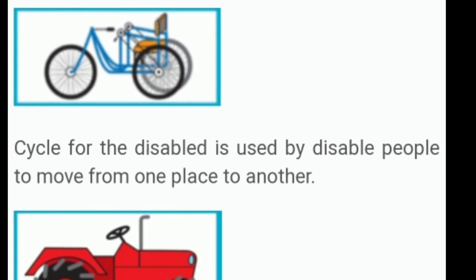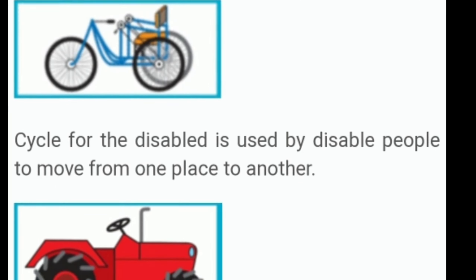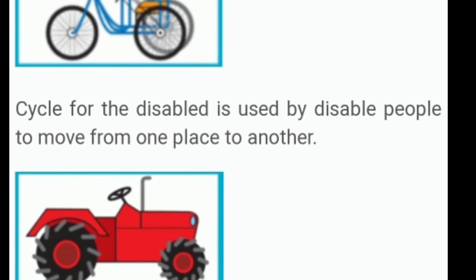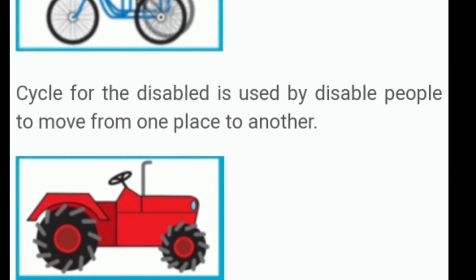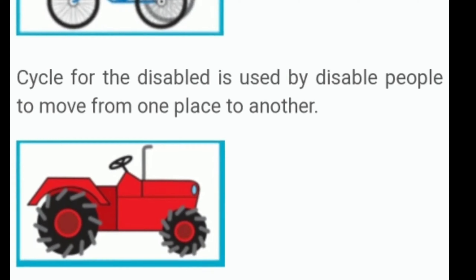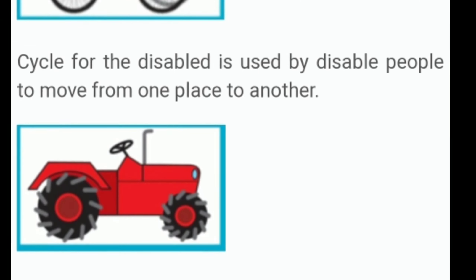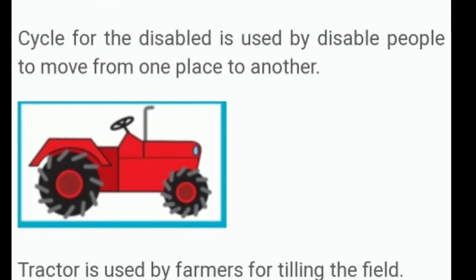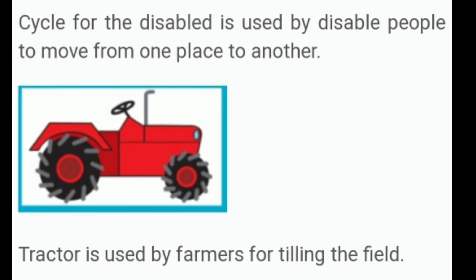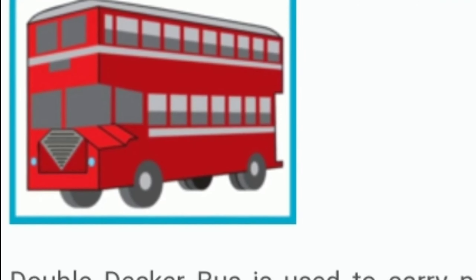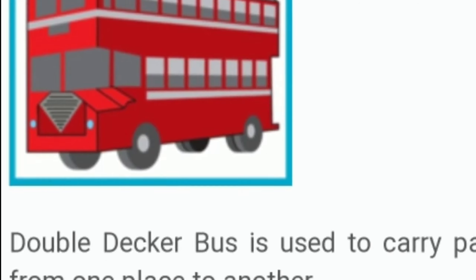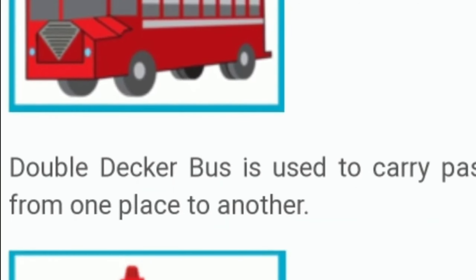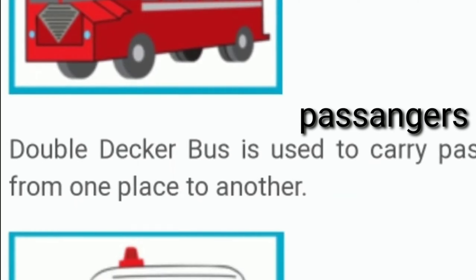Next picture is of a tractor. Tractor is used by farmers for tilling the field. Now, this is a double-decker bus. Double-decker bus is used to carry passengers from one place to another.